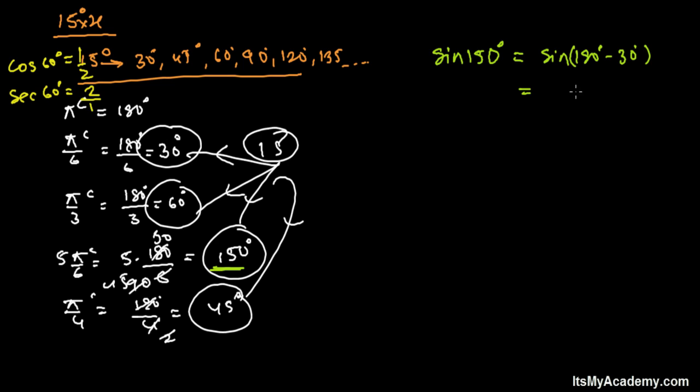It's sine 150 degrees. You can do like this: sine 180 degrees minus 30 degrees. That's equal to sine 30 degrees. Why? Look here, use the quadrant rule. Sine 150 is coming somewhere in the second quadrant. So what I did: I choose pi - 180 degrees - I choose pi minus 30 degrees. That's pi by 6, or you can say simply 180 degrees minus 30 degrees.